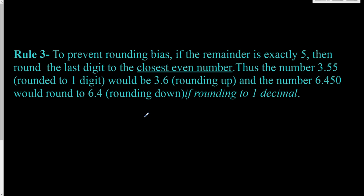If the remainder is exactly five, then round the last digit to the closest even number. Thus, the number 3.55 rounded to one digit would be 3.6 (rounding up), and the number 6.45 would round to 6.4 (rounding down). Here's a little hint for my students.